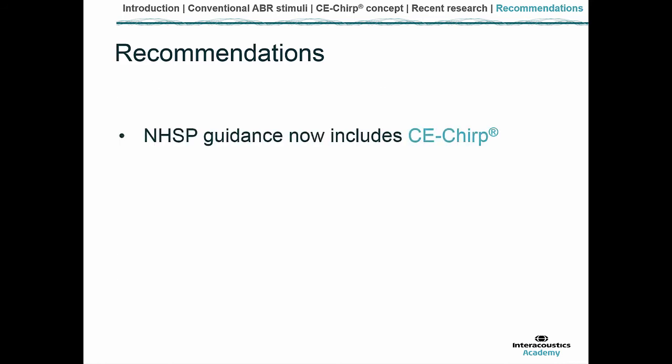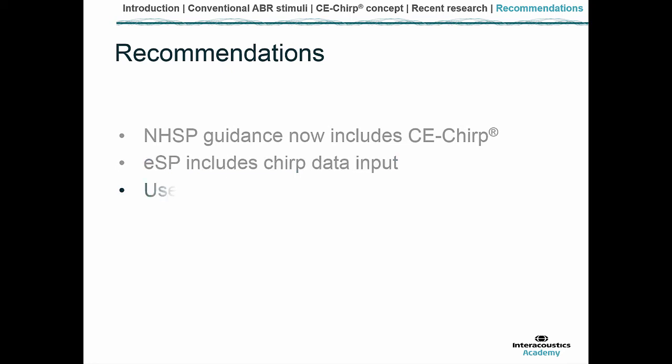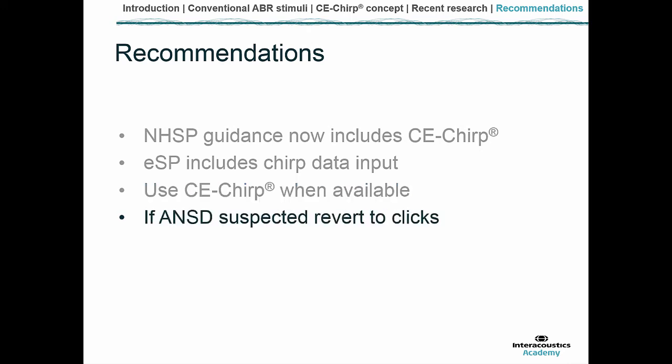What are the recommendations? Following on from the studies, the English NHSP guidance now includes information on the use of CE chirps. It is also included in the ESP database used for newborn hearing screening, which automatically applies the appropriate NHL to EHL corrections whether you enter tone PIP or chirp data. Our recommendation is to use chirps if they are available. However, if ANSD is suspected, the advice is to revert to clicks — the same advice as when using tone PIPs.